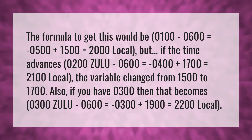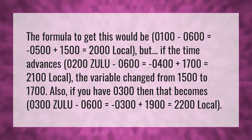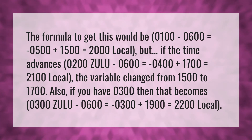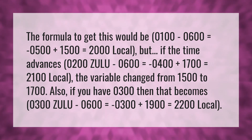Also, if you have 0300, then that becomes 0300 Zulu — 0600 equals 0300 plus 1900 equals 2200 local.